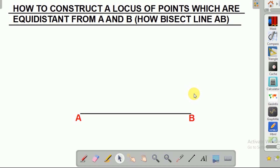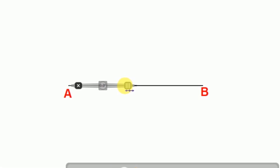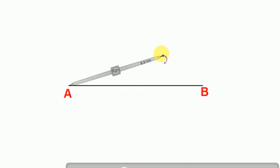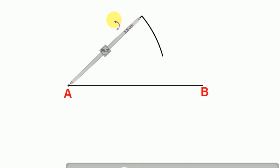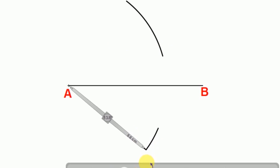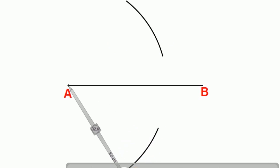The thing that you have to know is they're just telling you to bisect that line. To bisect the line, the first thing you're going to do is get your compass and measure more than half of the line. After you measure more than half, you're going to put your compass on point A. Then construct an arc above line AB and another arc below line AB.